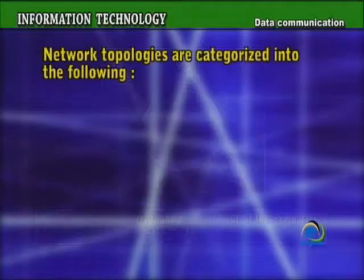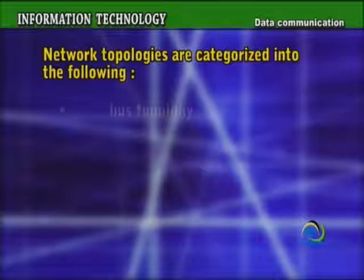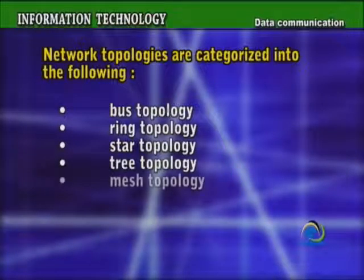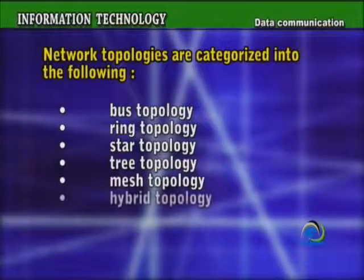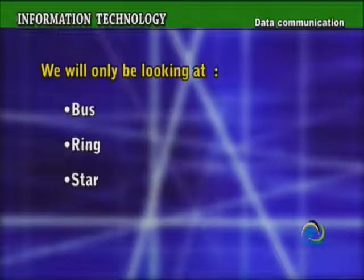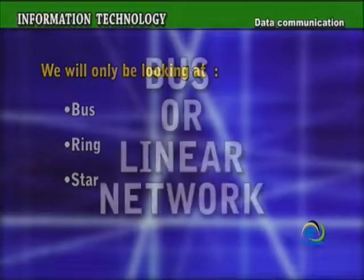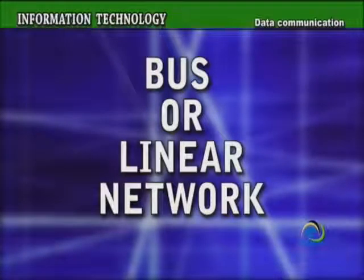Network topologies are categorized into the following: Bus Topology, Ring Topology, Star Topology, Tree Topology, Mesh Topology, and Hybrid Topology. We will only be looking at Bus, Ring, and Star Topology. Other networks usually use combinations of these topologies.